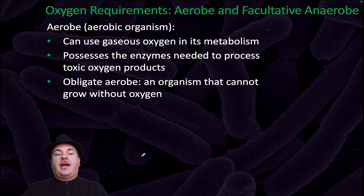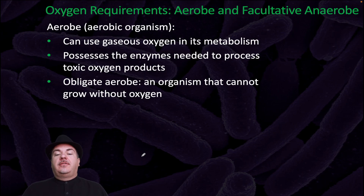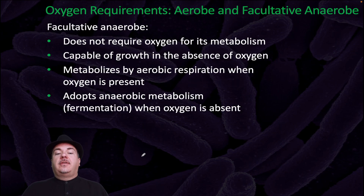There are different types of organisms based upon how they can or cannot use oxygen. Aerobes, or aerobic organisms, can use gaseous oxygen in their metabolism and possess the enzymes needed to process toxic oxygen products. Obligate aerobes cannot grow without oxygen — humans are an example of obligate aerobes. Facultative anaerobes do not require oxygen for metabolism and are capable of growth in its absence, but when oxygen is present they can perform aerobic respiration, and when it is not present they use anaerobic metabolism or fermentation.